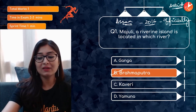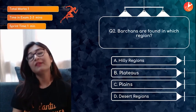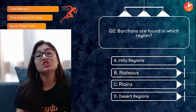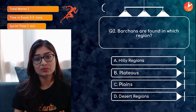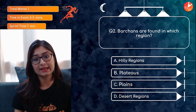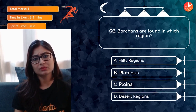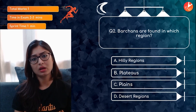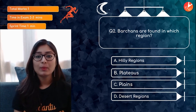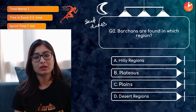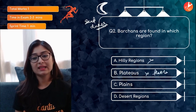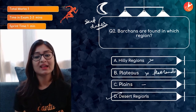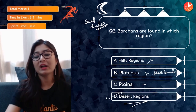Second question: Barchans are found in which region? Barchans are crescent moon-shaped sand dunes. They can be found in hilly regions, plateaus, plains, or deserts. The answer is deserts — Barchans are found in desert regions.